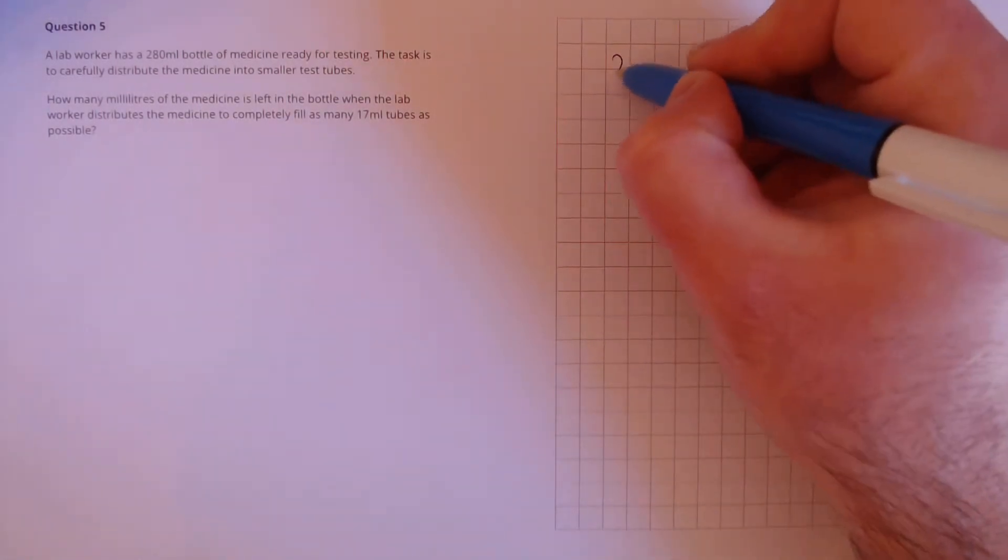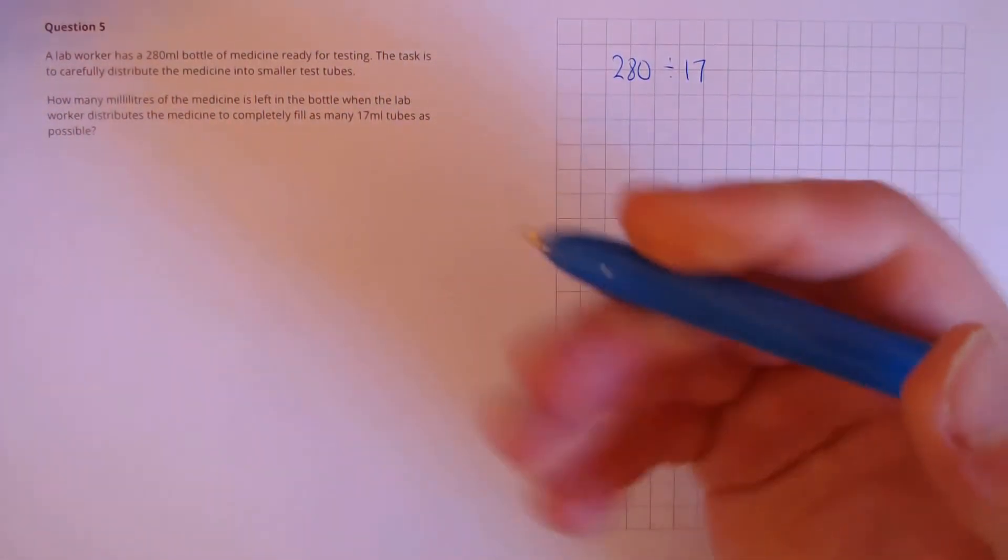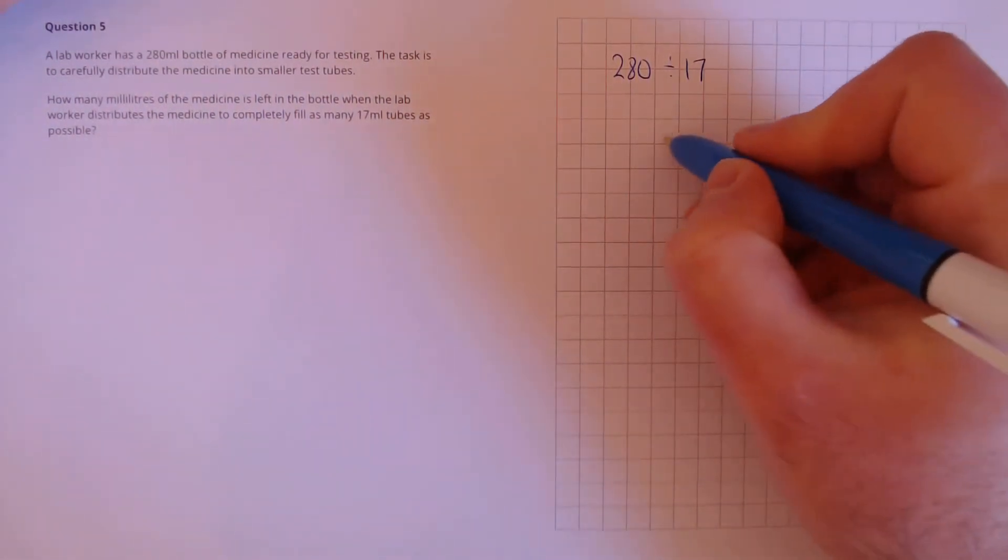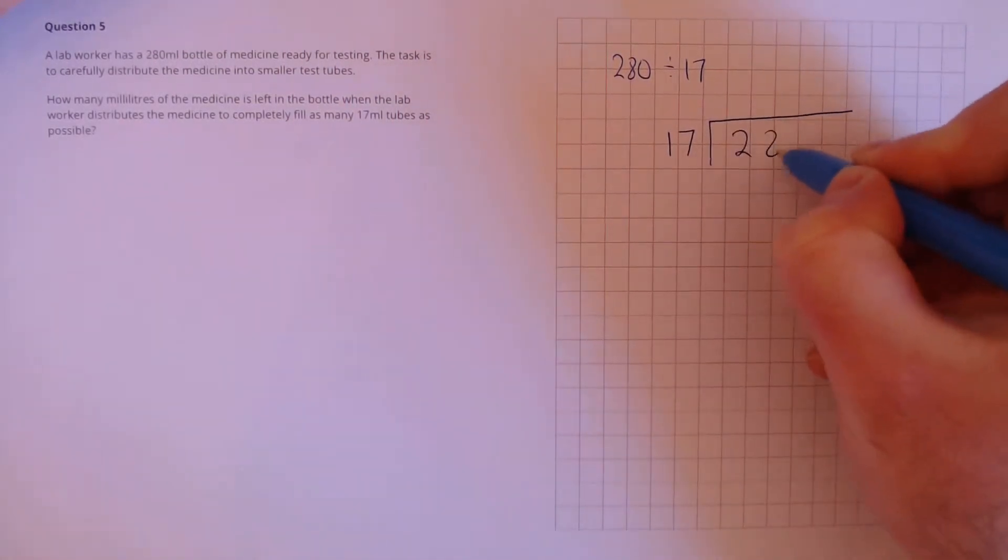Here we need to divide 280 by 17 and find out the remainder. In order to do that we are going to use a long division. 17 into 280.